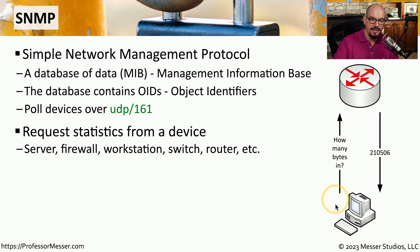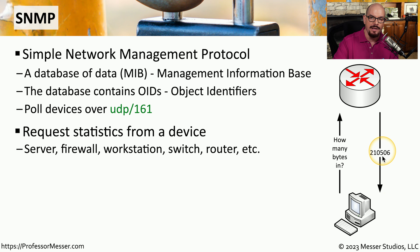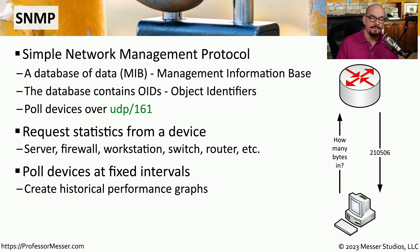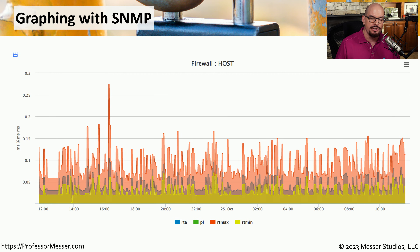So you might have a network management station that is asking a device like a router how much information has been transferred in bytes on a particular interface, and that device will respond back with that value. The management station can then wait a certain amount of time — say five minutes or 10 minutes — and then perform the same query again and collect an updated value for that information. Now that you have all of these statistics that you've been gathering over time, you can create graphs and charts showing the difference between one time frame and another. For example, this graph has been created by querying a firewall with SNMP and receiving response time information over a long period.